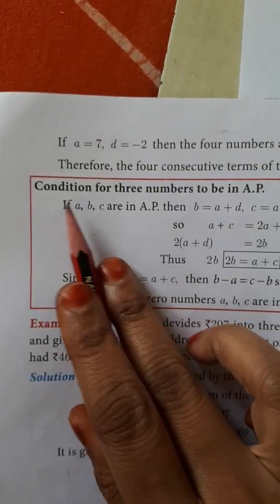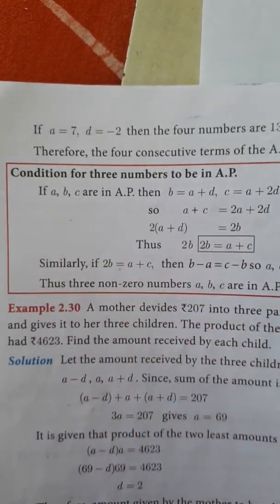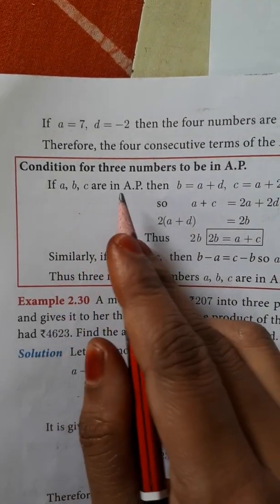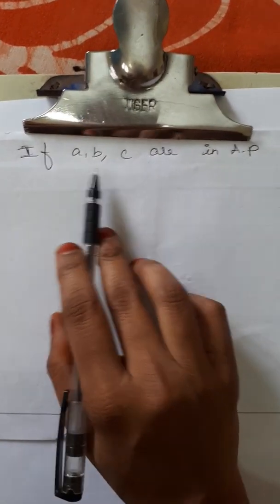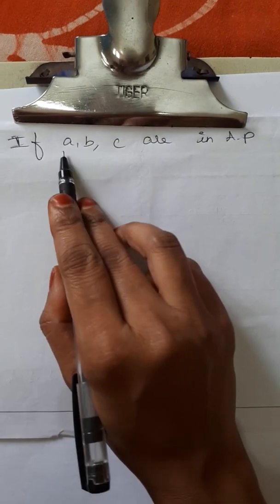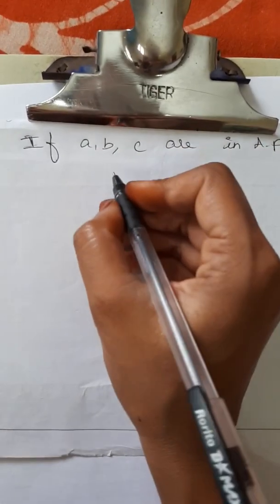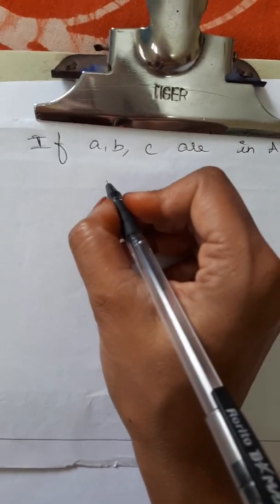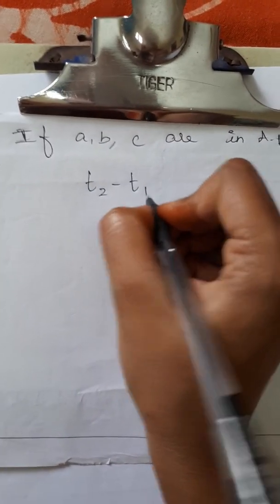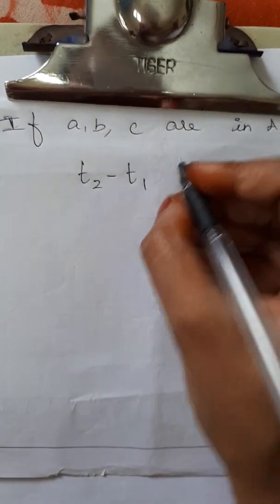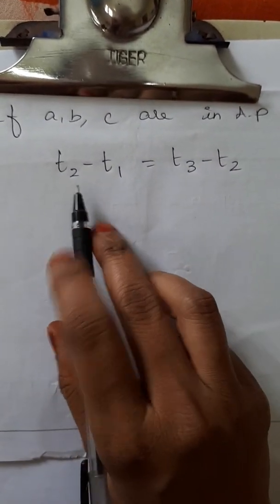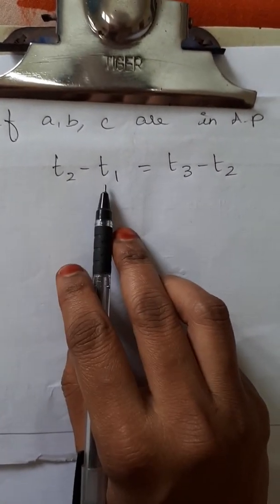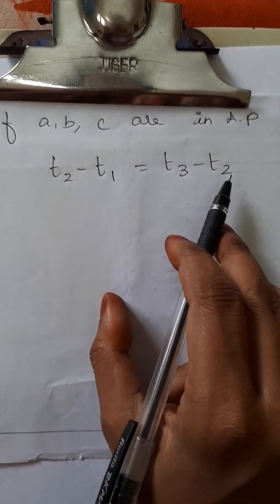Next, the condition for three numbers to be in AP: if A, B, C are in AP, then there is a common difference such that T2 minus T1 equals T3 minus T2, meaning the second term minus the first term equals the third term minus the second term.